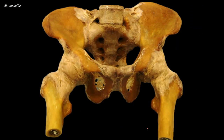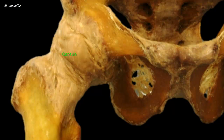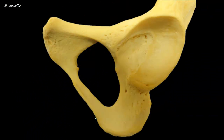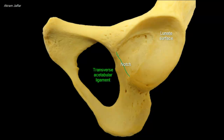Now let's deal with the attachment of the capsule of the hip joint. The fibrous capsule forms a sleeve that encloses the hip joint and most of the neck of the femur. It is attached proximally to the edge of the acetabulum and the transverse acetabular ligament. Here is a close-up view of the acetabulum, the hip joint socket. It shows the C-shaped articular surface, also called the lunate surface, and the acetabular notch inferiorly. The notch is closed in life by the transverse acetabular ligament. Note that the articular surface does not occupy the whole acetabulum, but there is a non-articular acetabular fossa occupied in life by a pad of fat, the Haversian pad.